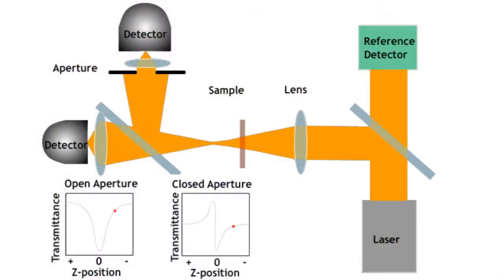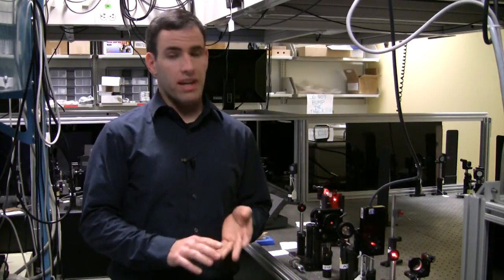So Z-scan is a remarkably easy technique to set up and has a very simple layout. We simply monitor the transmission of a focused Gaussian beam through a sample. And by monitoring that transmission, we can get both the nonlinear refractive index and the two-photon absorption coefficient. It's very unique in the fact that you can look at a number of different types of samples. You can look at solutions and films, highly absorbing materials, non-fluorescent ones. So it's very amenable to that.